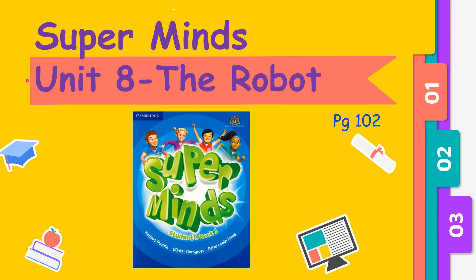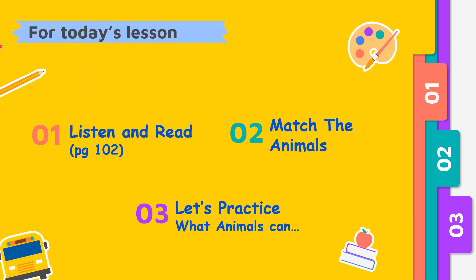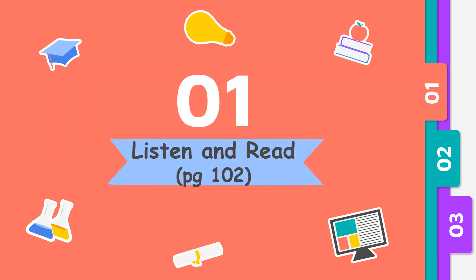Good day, children. Today we are going to continue with our lesson, Unit 8, The Robot from the Supermines textbook, page 102. For today's lesson, we're going to start off with the Listen and Read text from page 102. We're going to try to match the animals and do some simple practices about what animals can do. So now let's start with Listen and Read from our textbook page 102.